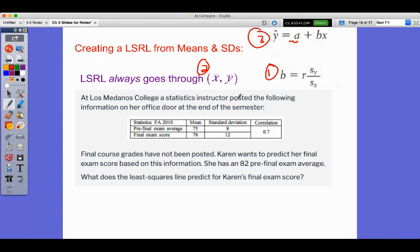So there's a statistics professor. They wanted to use your pre-exam average, which everyone knows, in order to predict your final exam score. That's what we're trying to predict. And so Karen wants to predict her final exam based on this information. She got an 82 as her pre-exam average. Can we use that to predict her final exam score?